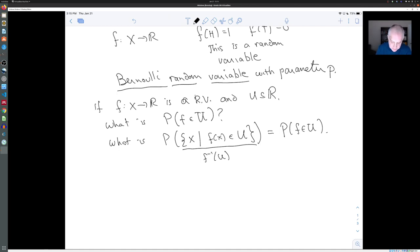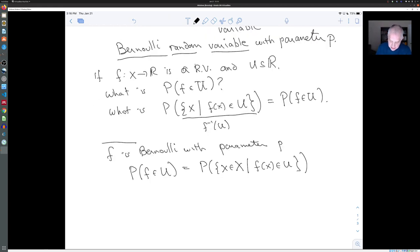So that's kind of abstract. Let's look at our Bernoulli case. It's very simple. If we take a set U in the real numbers, then we ask, so if f is our Bernoulli with parameter P, then the probability that f is in U is the probability of the measure of the set of X in X, such that f of X is in U. But of course, X only has two elements, it only has heads and tails.